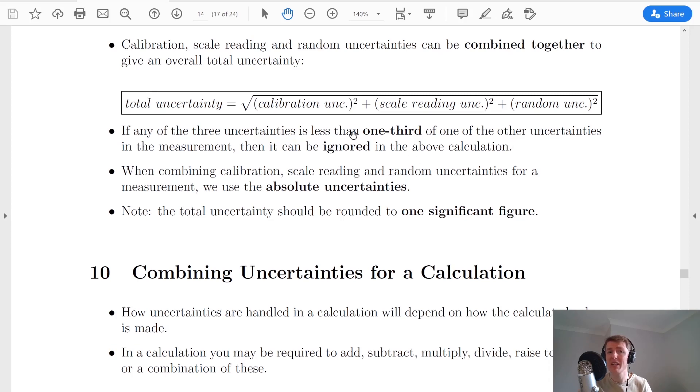So as an example, let's say my calibration uncertainty was plus or minus one centimeter, my random uncertainty was plus or minus five centimeters, and my scale reading uncertainty was plus or minus seven centimeters. Then that means I could get rid of my calibration uncertainty because it's less than one third of my biggest uncertainty. So I could get rid of the calibration uncertainty and that would simplify my calculation.